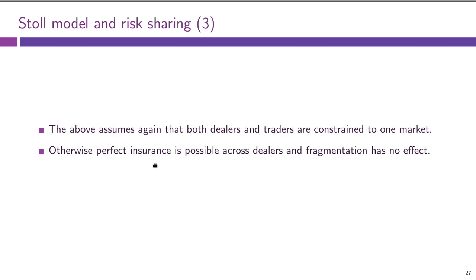The bottom line for Stoll's model: if you isolate dealers from one another, they cannot provide insurance to each other, so they will not be willing to take as much risk in total. However, in reality there are plenty of inter-dealer markets, and dealers still trade with each other across fragmented markets. So I do not really think that this risk-sharing motive is a good reason for consolidation.